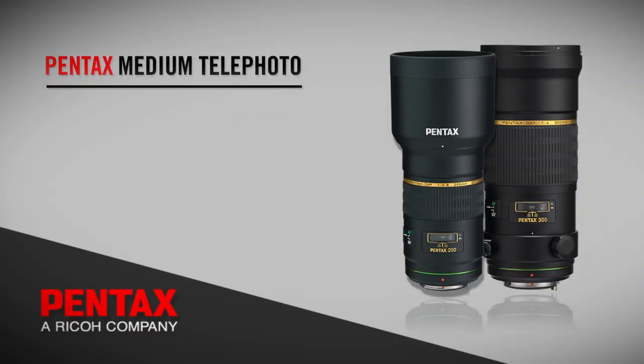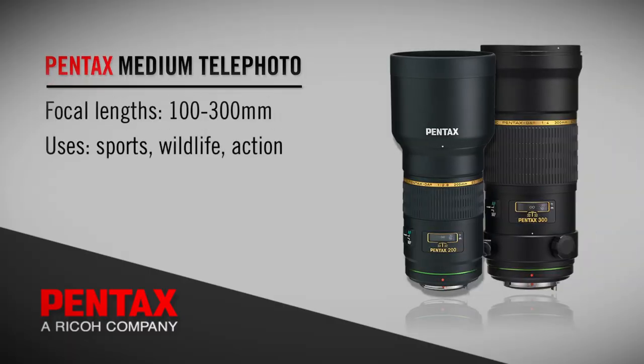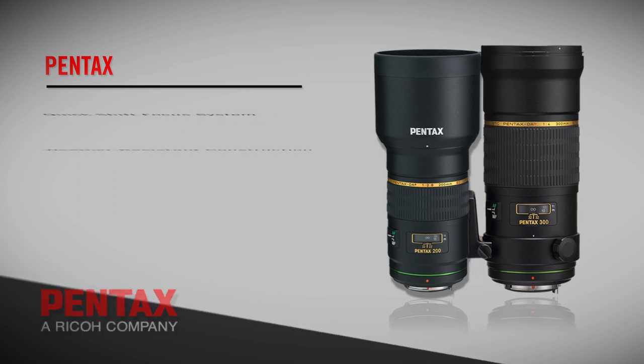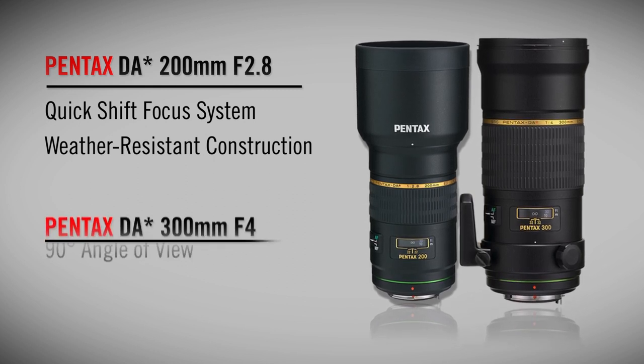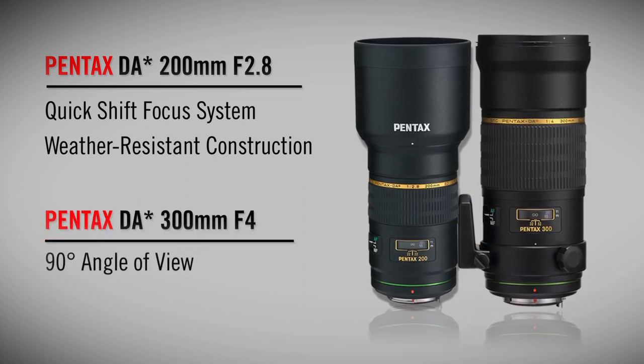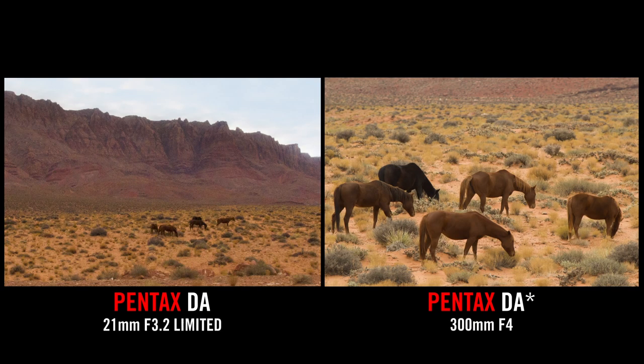Medium telephoto lenses range from 100 to 300mm and are excellent sports, wildlife, and action lenses. Two of these lenses I go to are the Pentax DA Star 200mm f2.8 and the Pentax DA Star 300mm f4. With a telephoto lens, a certain amount of visual compression will occur, as the foreground, mid-ground, and background appear closer together. This is the opposite of what we talked about with wide-angle lenses. Telephoto lenses make the background appear larger and closer to foreground subjects.